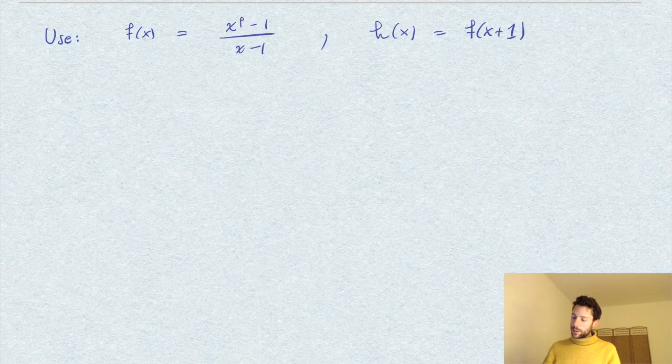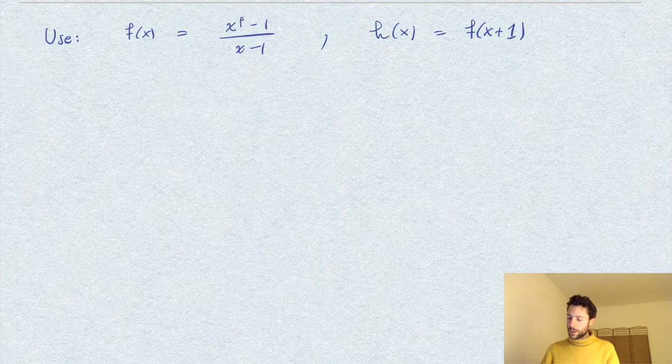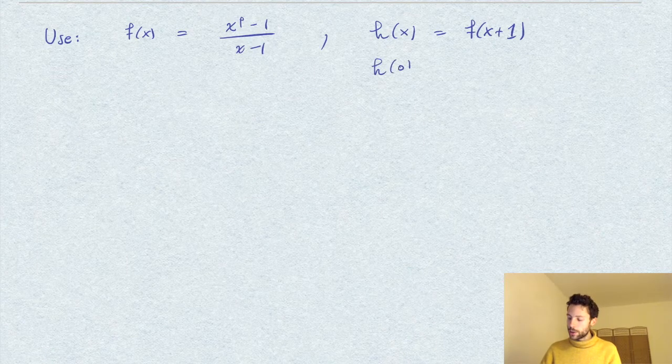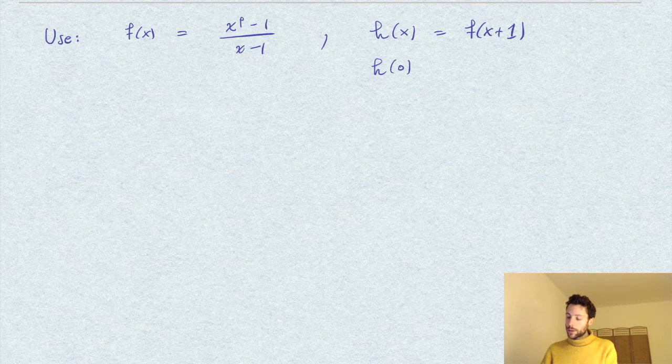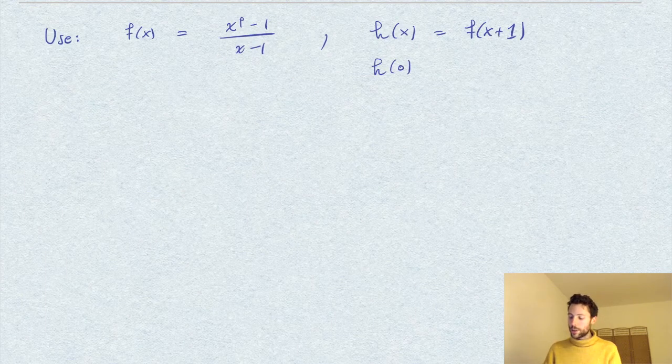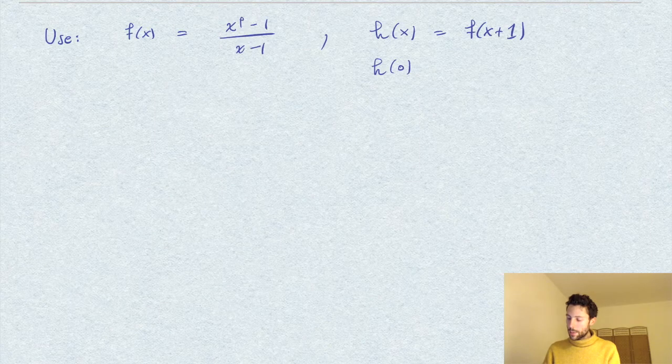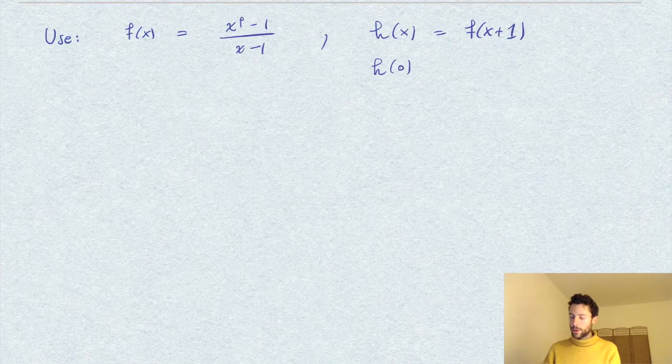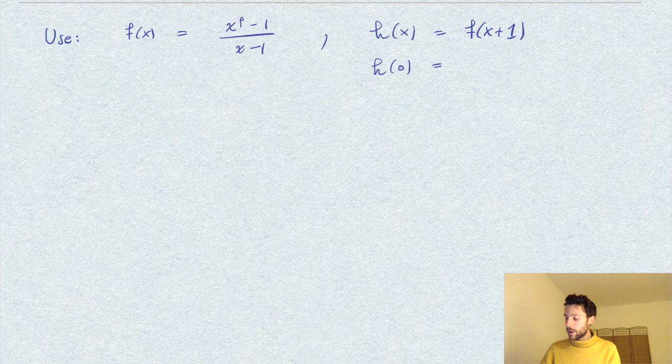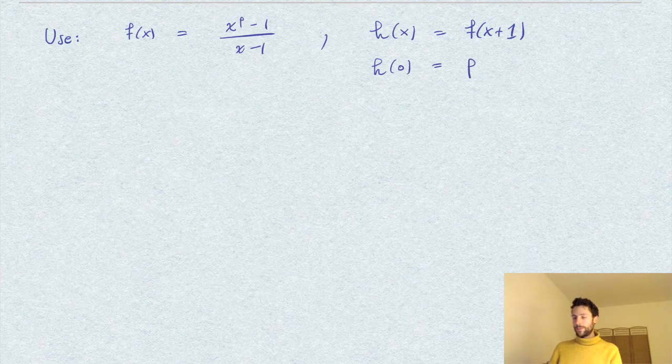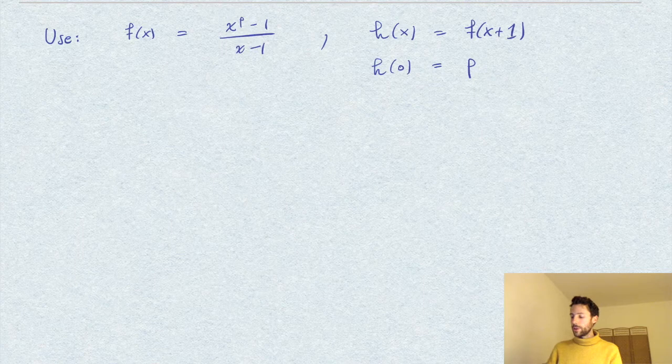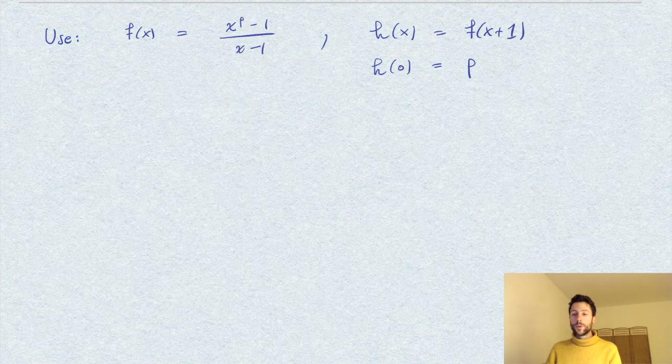And notice that the constant term of h, if I evaluate h at zero—of course not using this ratio expression which has singularity at x equal to zero—but we can evaluate using the first form I gave for f. And you see that this would be the sum of ones p times, so this is precisely p.